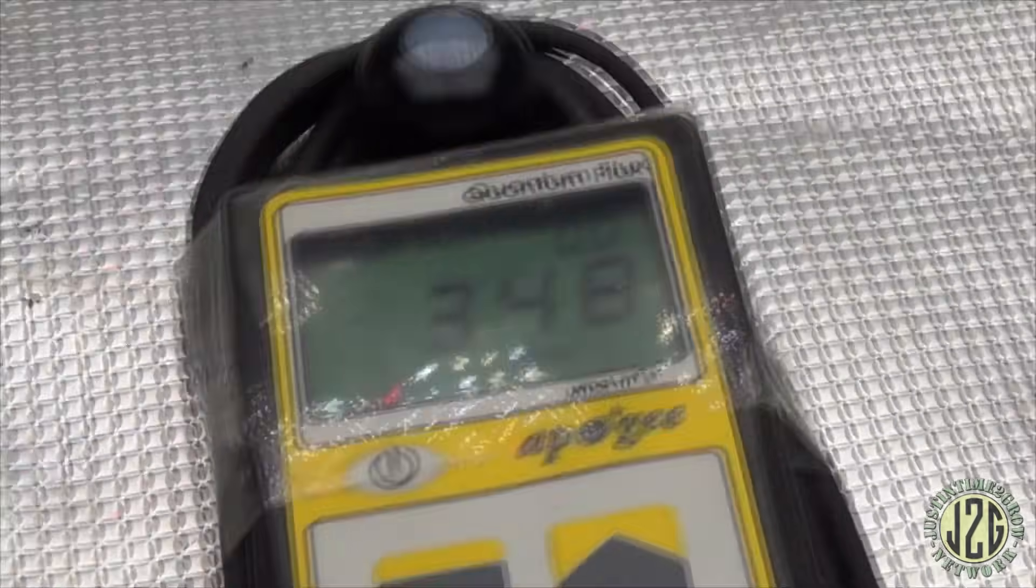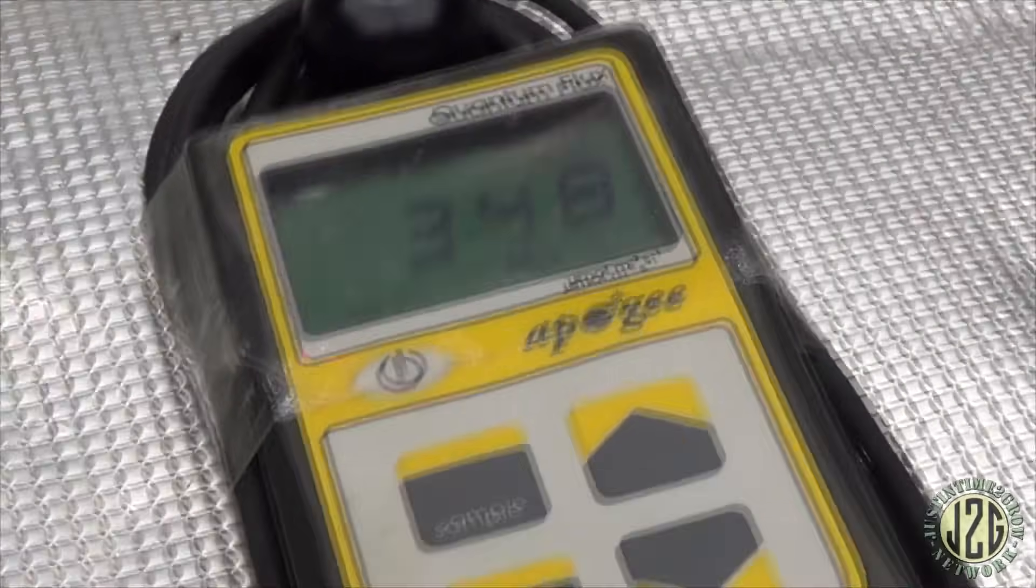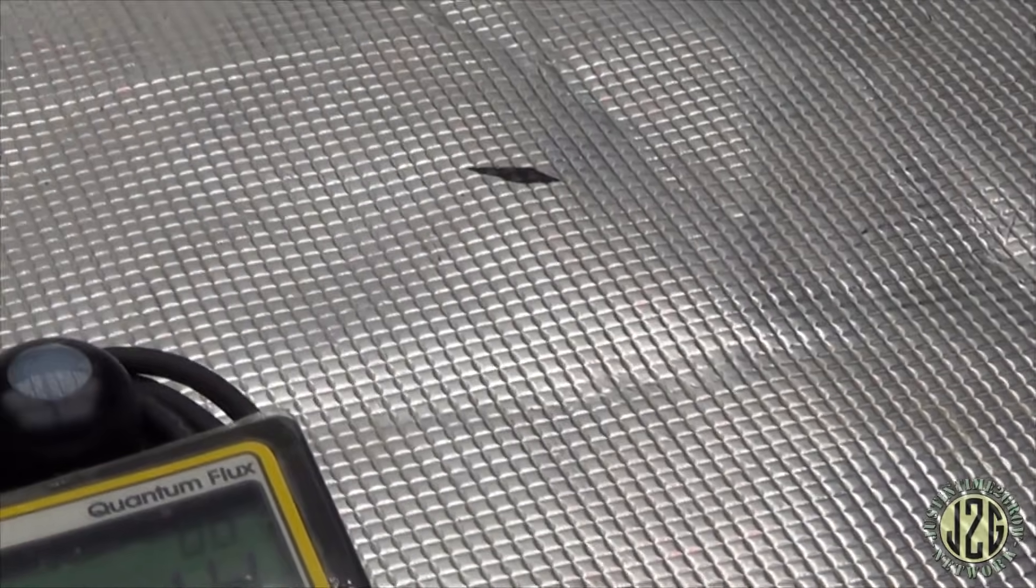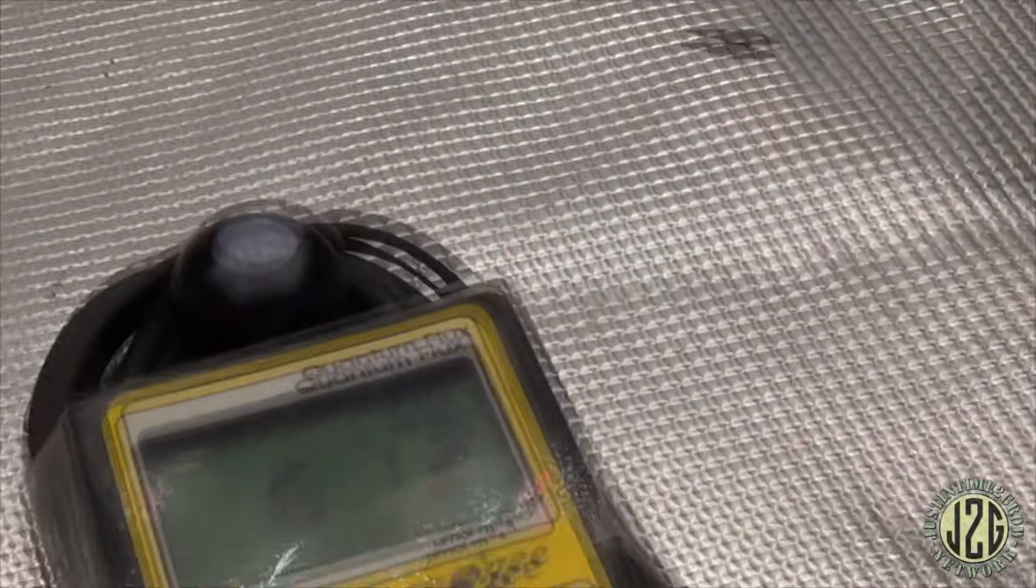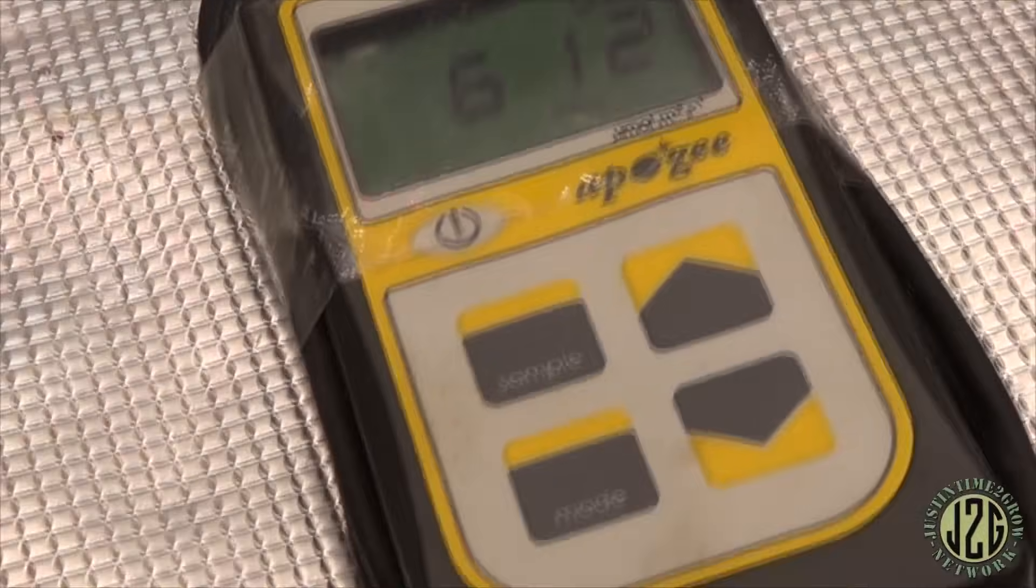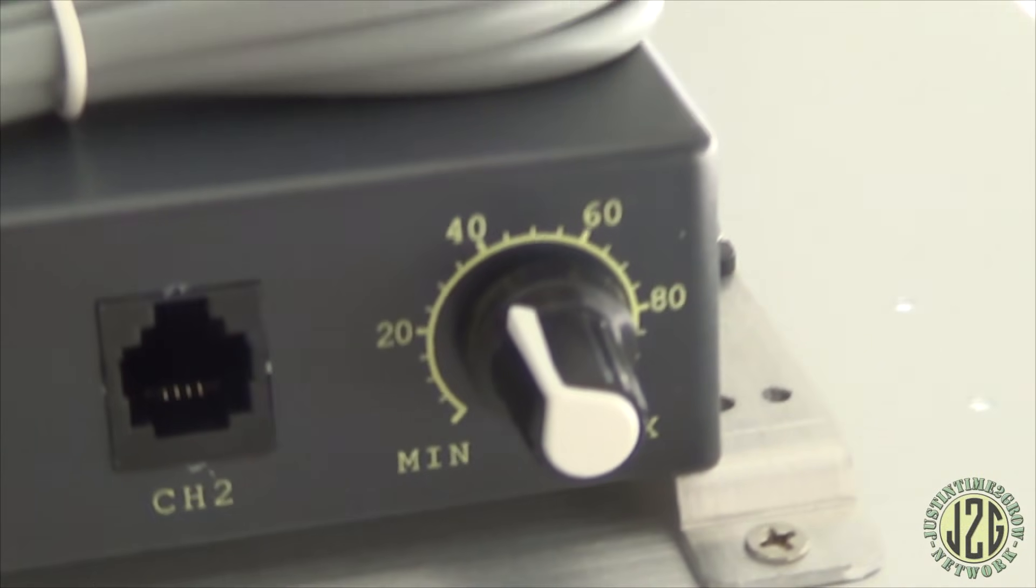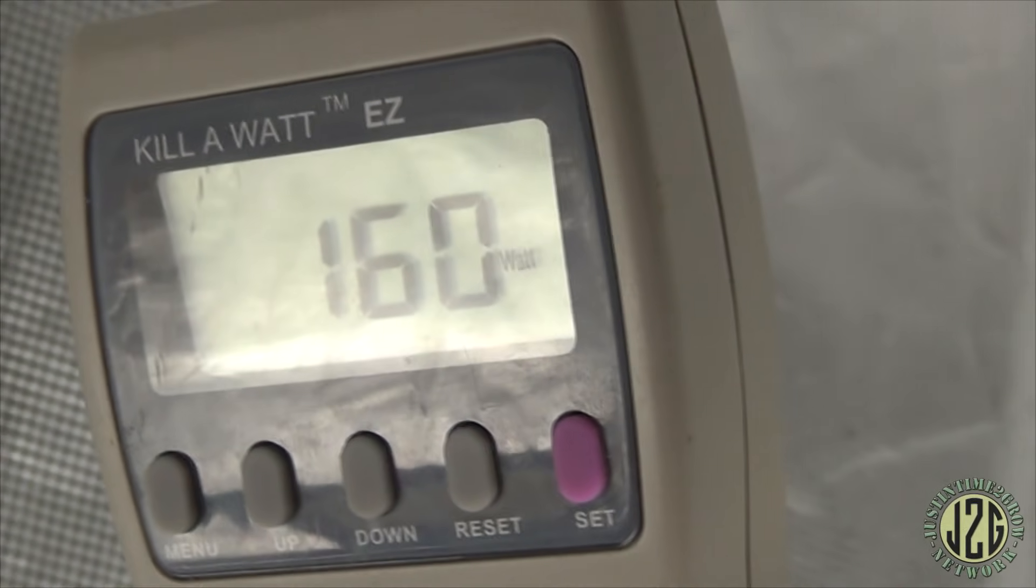God damn, this reflection is killing me right now. It's so bright in here, just reflections everywhere. All right there we go, let's crank it up to 40 percent. Now we're in flowering territory - 612. That's awesome, that's only at 40 percent. Check that out, 40 percent, so we're pushing 160 at the wall now at 40 percent.